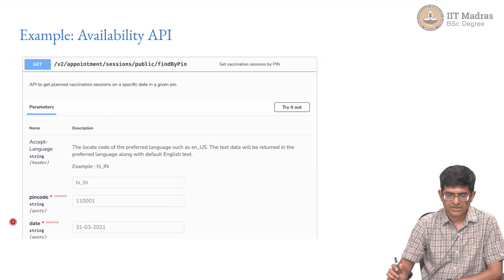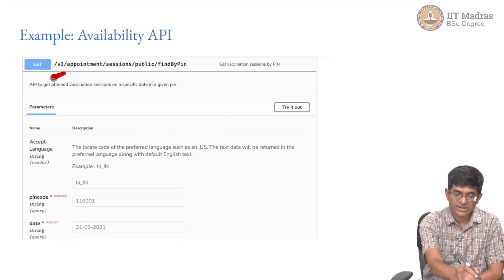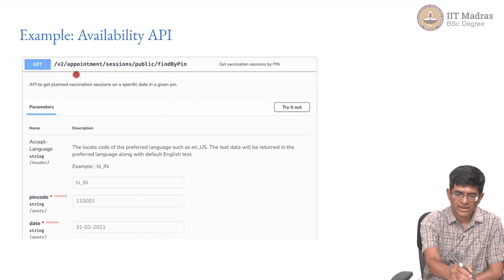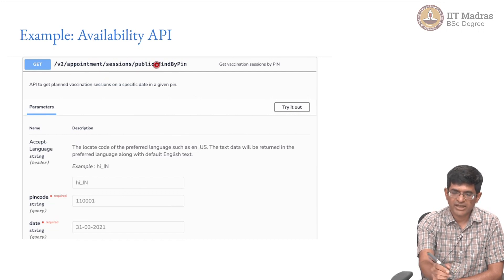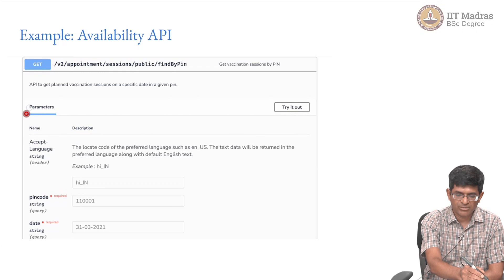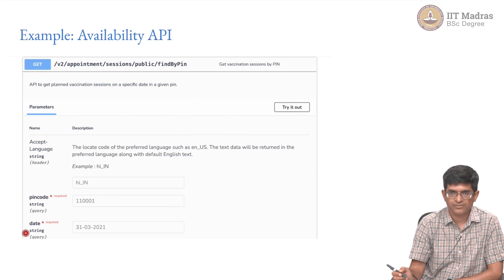One of the APIs is the availability API, and it is version 2 — there was probably some initial version 1 and at some point they had to make breaking changes which is why they moved to version 2. It looks at appointment objects and lets you find a new session by pin code. This is the route used for accessing this part of the API, and it requires the pin code and the date on which you want to search.